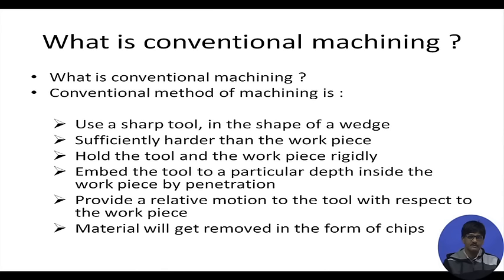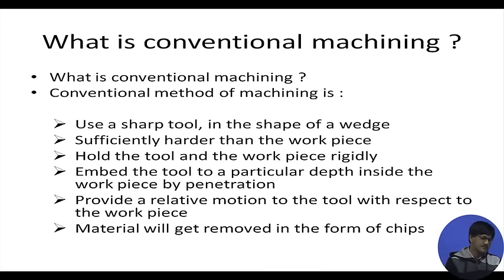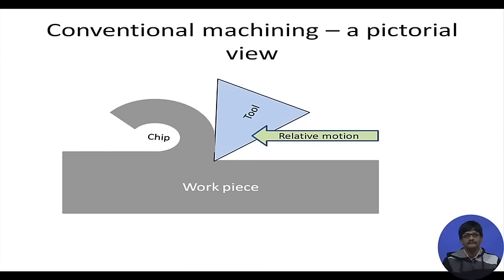The tool must be sufficiently harder than the work piece so it can indent and penetrate it. The tool and work piece are held rigidly because the forces arising in their interaction can be in hundreds of newtons. The tool is embedded into the work piece to a particular depth by penetration, and then a relative motion is provided so that material gets removed in the form of chips.